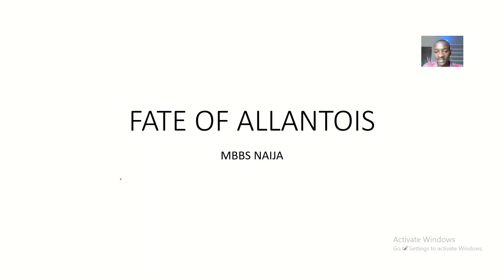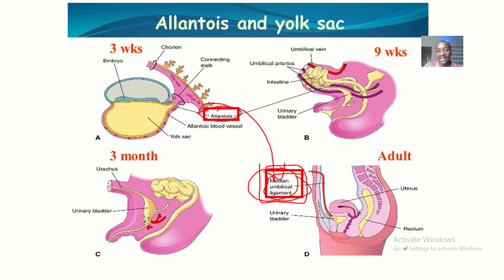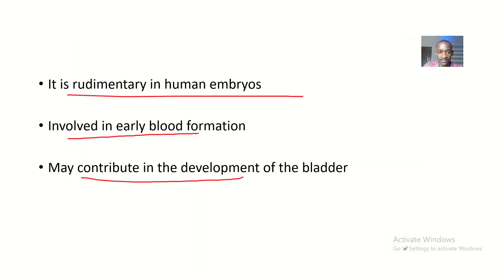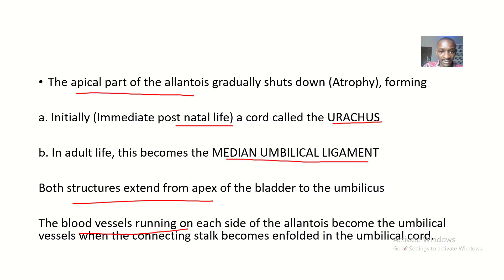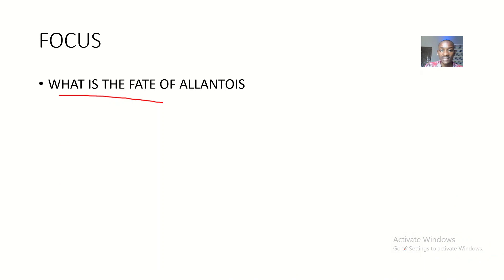So basically, as the fate of the Allantois: it becomes the Urachus and then the median umbilical ligament. That's it — see you guys in the next one.